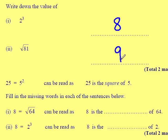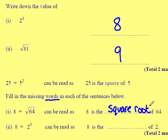Question 2. 25 is 5 squared. That can be read as '25 is the square of 5.' Fill in the missing words in each of the sentences below. 8 equals square root of 64 can be read as '8 is the square root of 64.' 8 equals 2 cubed, so 8 is the cube of 2.